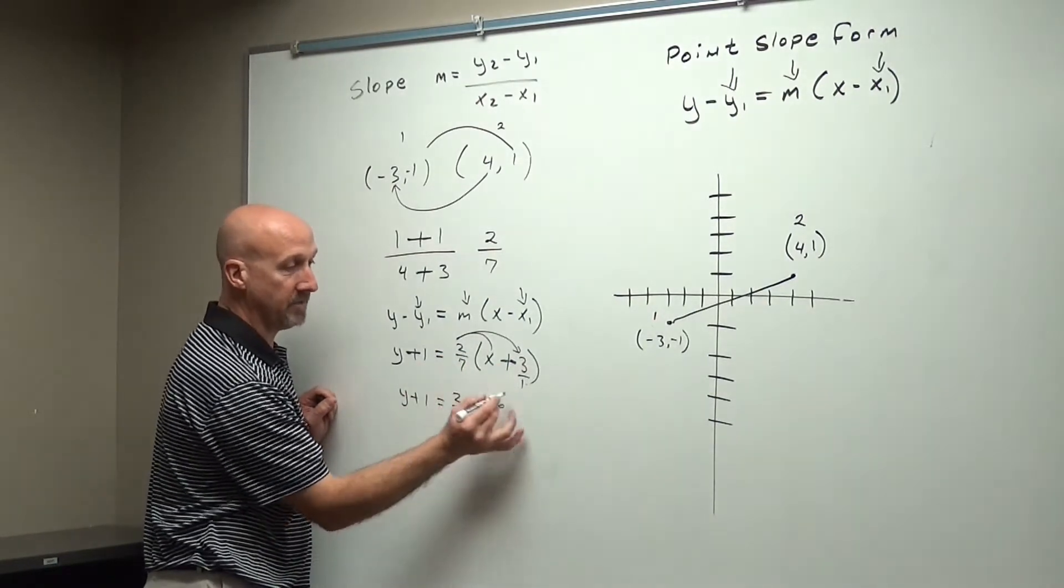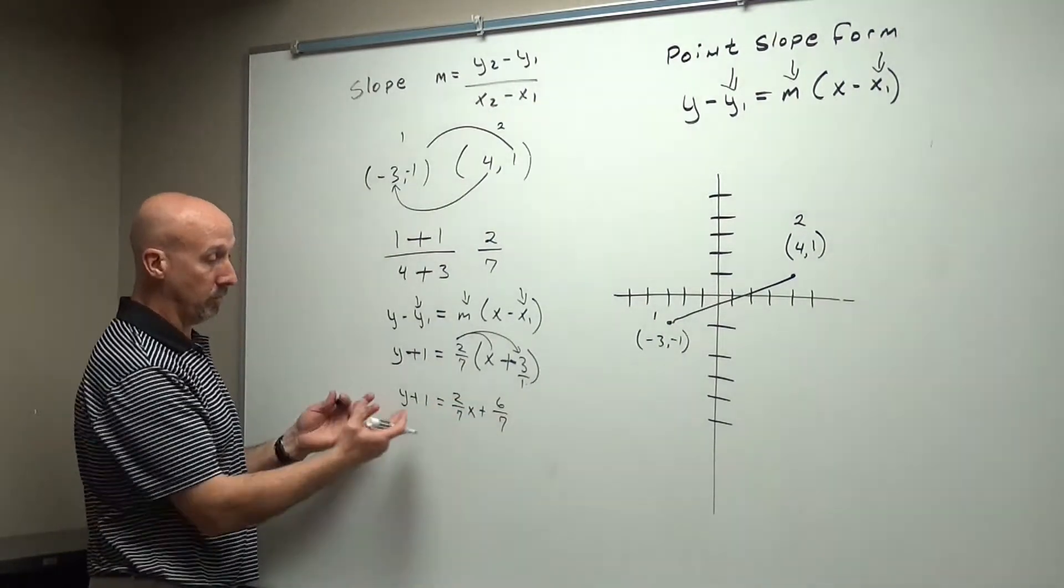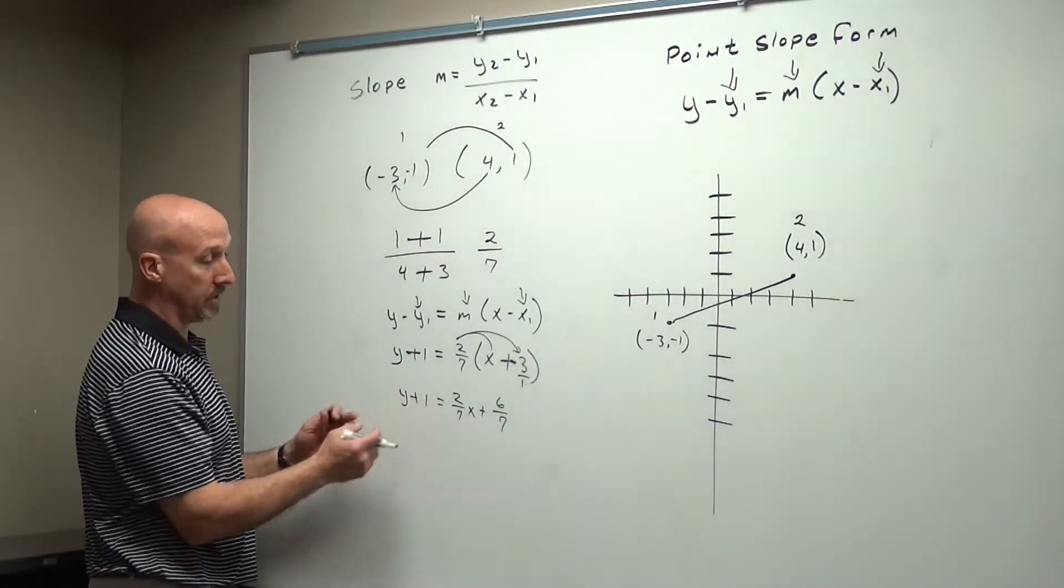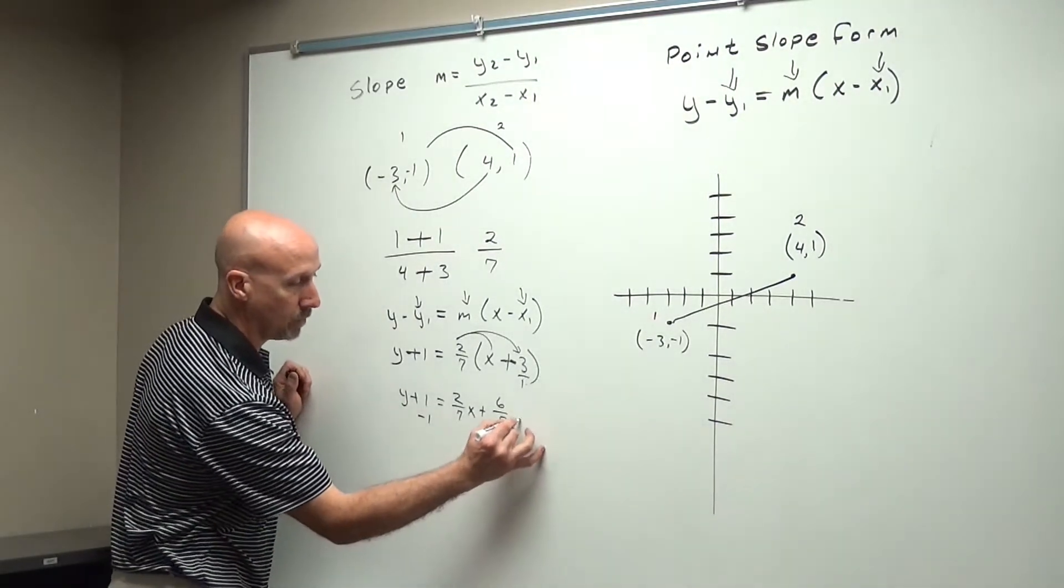bottom times the bottom. 7 times 1 is 7. So we're in this case here, and now we're just needing to get y by itself, so I have to get rid of a positive 1. To get rid of a positive 1, we subtract 1.